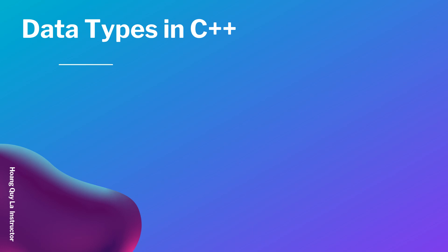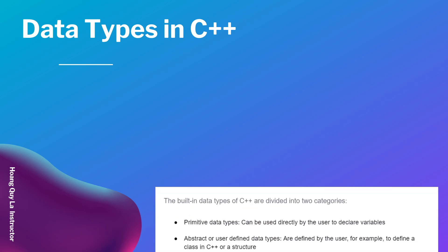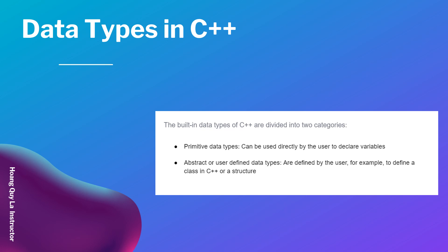Welcome to another YouTube video. In this video we'll talk about the data types in C++. There are two main data types in C++: the first one is primitive data types, which can be used directly by the user to declare variables, and the second one is abstract or user-defined data types, which are defined by the user — for example, a class or a structure in C++.